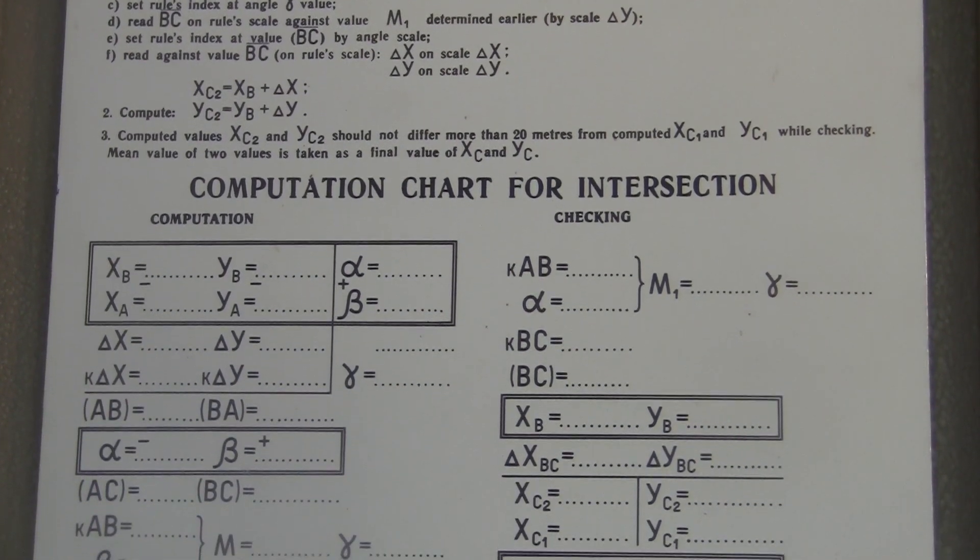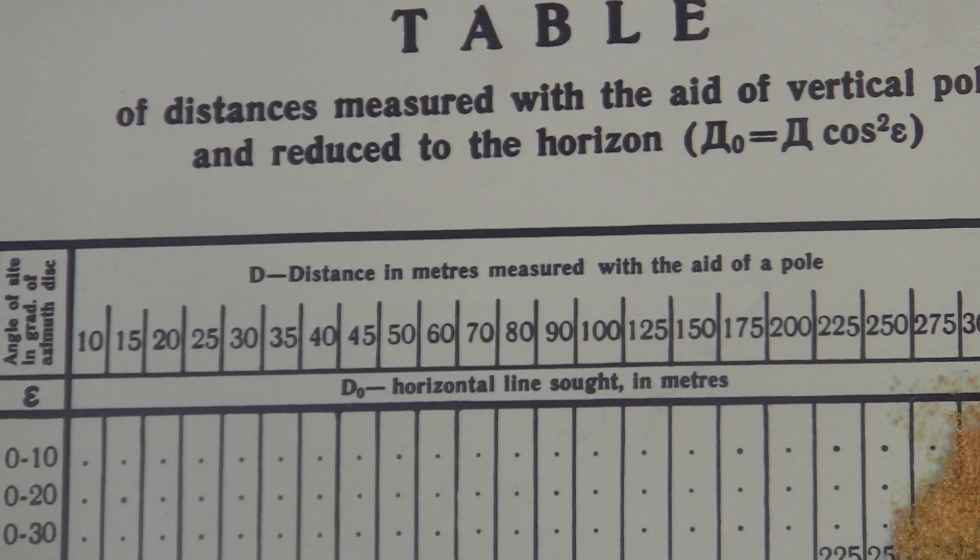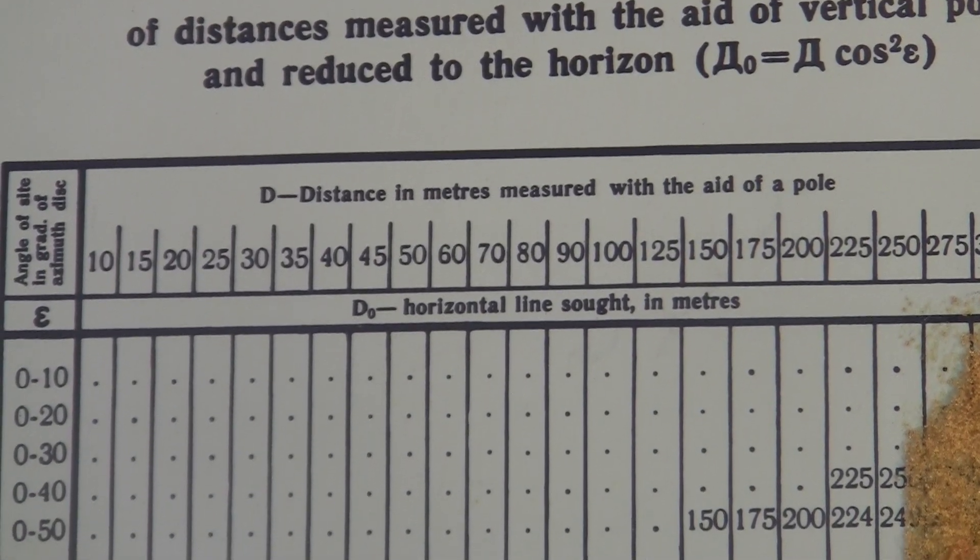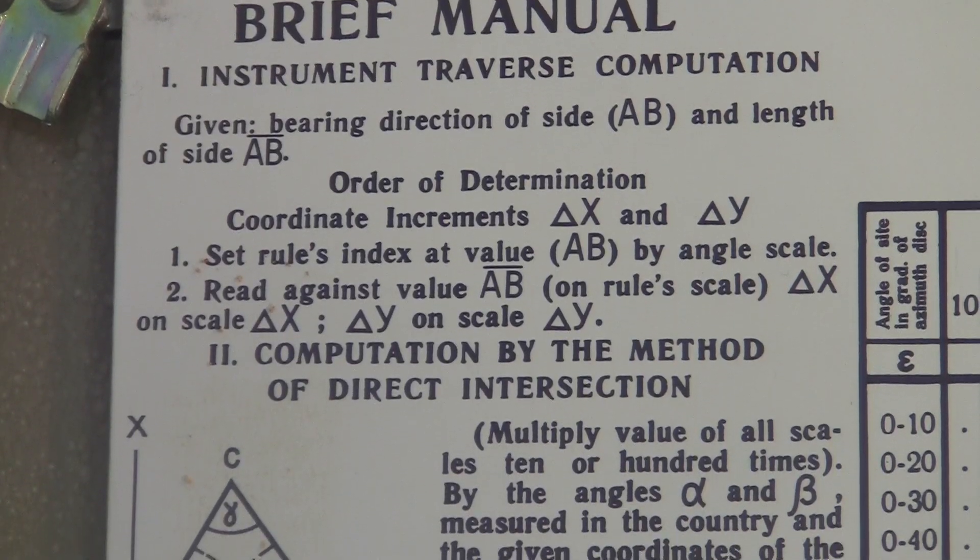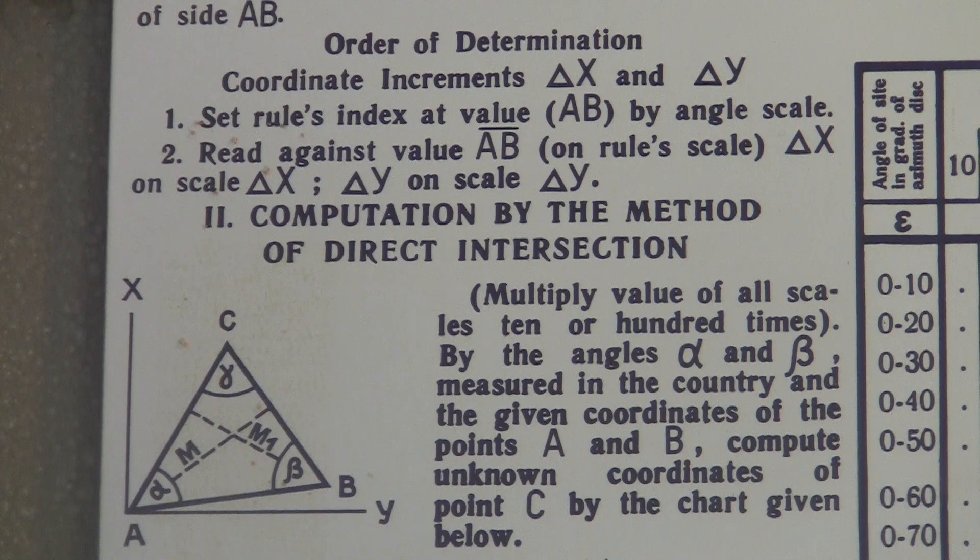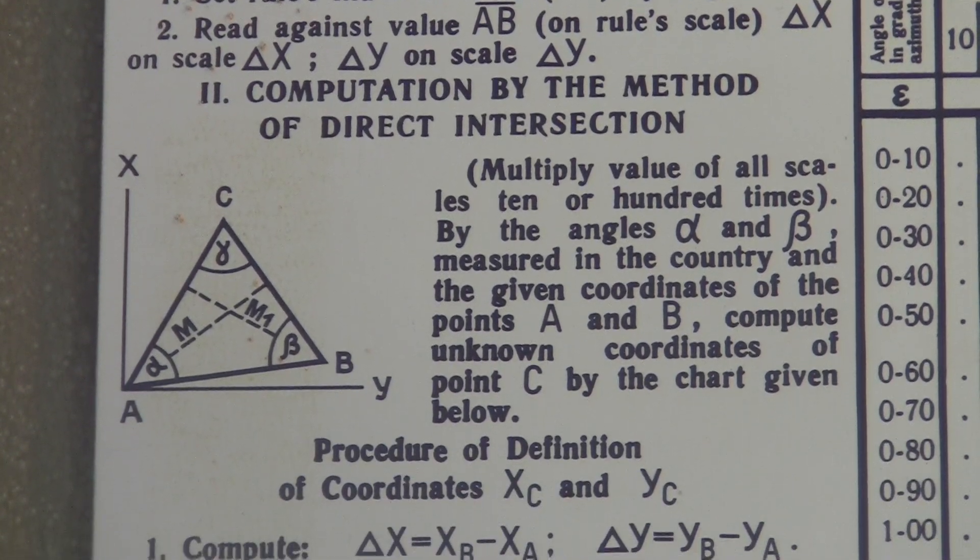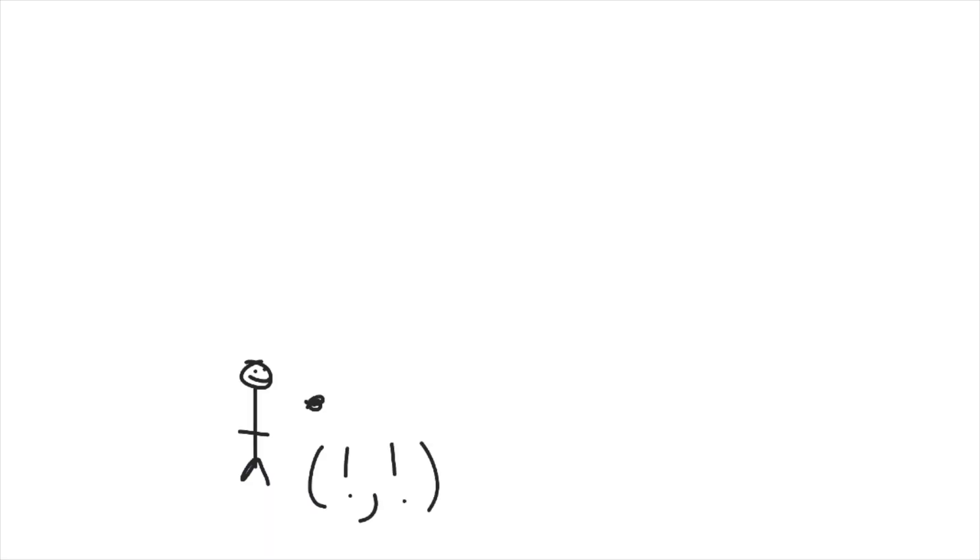This thing is meant for doing geometric calculations about distances and angles between points. The instructions suggest this would have been used by artillery units trying to aim their guns. There's lots of geometric information that you might want in that situation. Like if I know the coordinates of where I am,